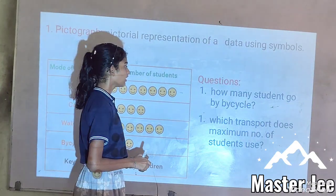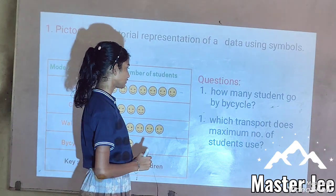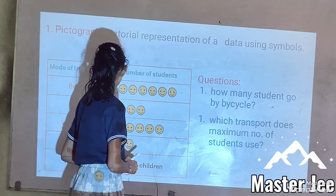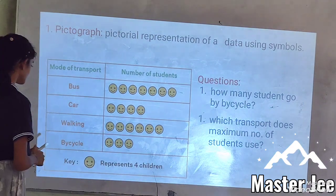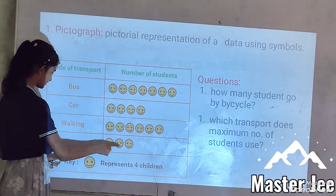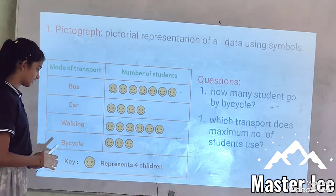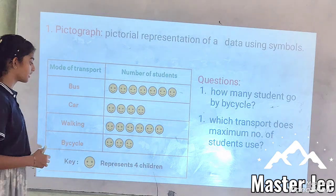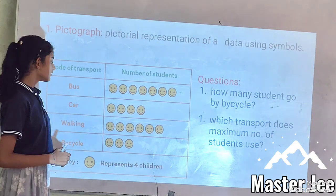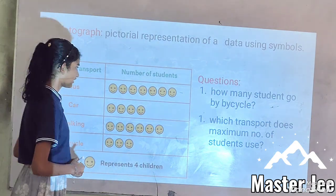Question: How many students go by bicycle? Since there are three smileys at the bicycle row, we have to multiply three times four, which is twelve.